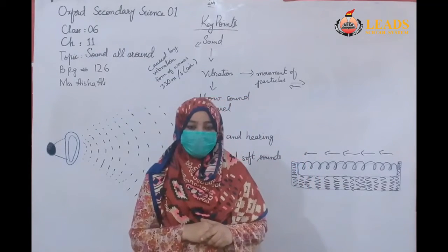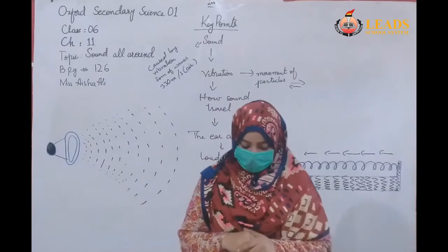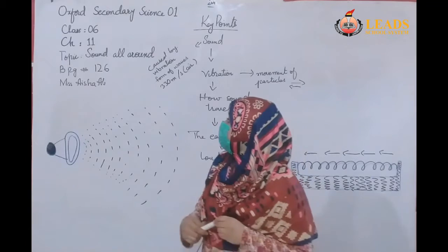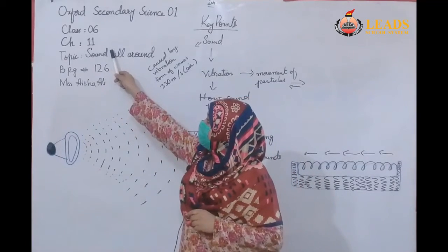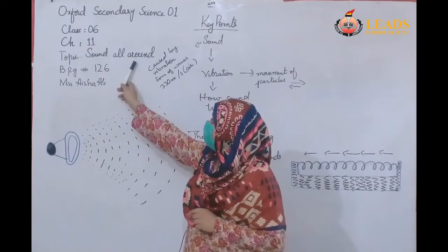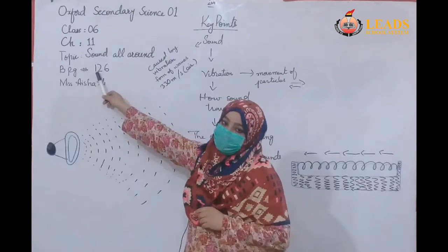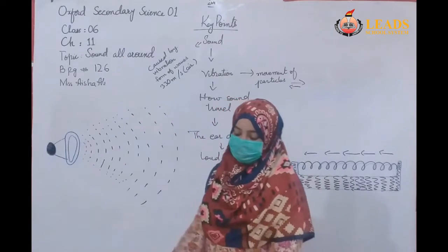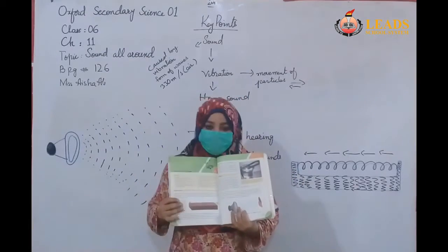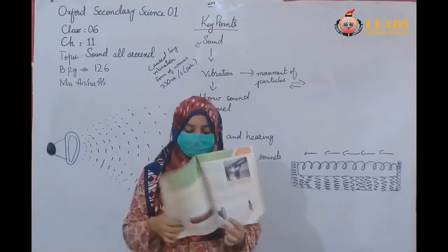This is our second video for Class 6. In this video we will discuss Chapter Number 11, and your topic name is 'Sound and Sound All Around.' Your book page number is 126. You can use your book — I am showing you your book, page number 126.